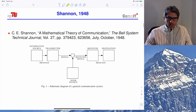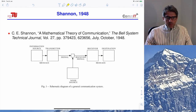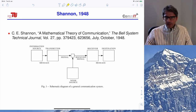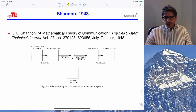In this paper, titled 'A Mathematical Theory of Communication,' which appeared in the Bell System Technical Journal in 1948, Shannon basically considered several things.